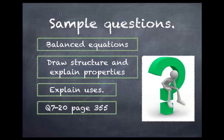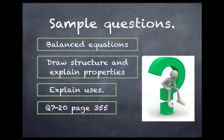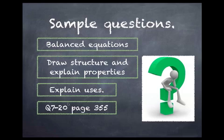We have sample questions. What you might be asked to do is write balanced equations for the production of some of these gases. You'll need to be able to explain the properties using the structures, so you need to remember how to draw valence structures for these gases showing all the bonds. To reiterate: nitrogen has a triple bond, oxygen has a double bond, and carbon dioxide has carbon in the middle with two double bonds to oxygen on either side. You should also be able to explain the uses. Structure, properties, uses, and balanced equations are the key things. Now you can take it easy and do some of these questions.